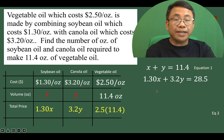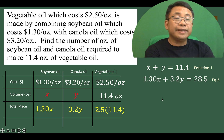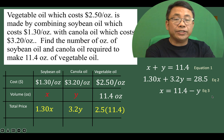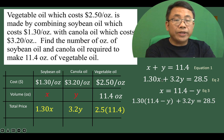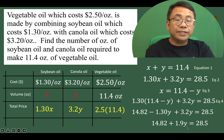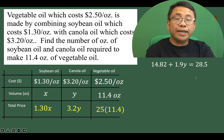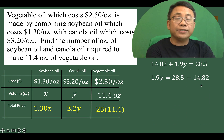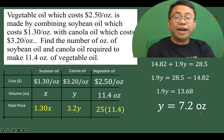Let's call these equation 1 and equation 2 — a system of two equations in two unknowns. We'll use the substitution method. From equation 1, solve for x to get equation 3: x equals 11.4 minus y. Substituting into equation 2 and distributing 1.30, then combining similar terms, we get 1.9y equals 28.5 minus 14.82. Simplifying and dividing both sides by 1.9, we have y equals 7.2 ounces — the volume of canola oil.